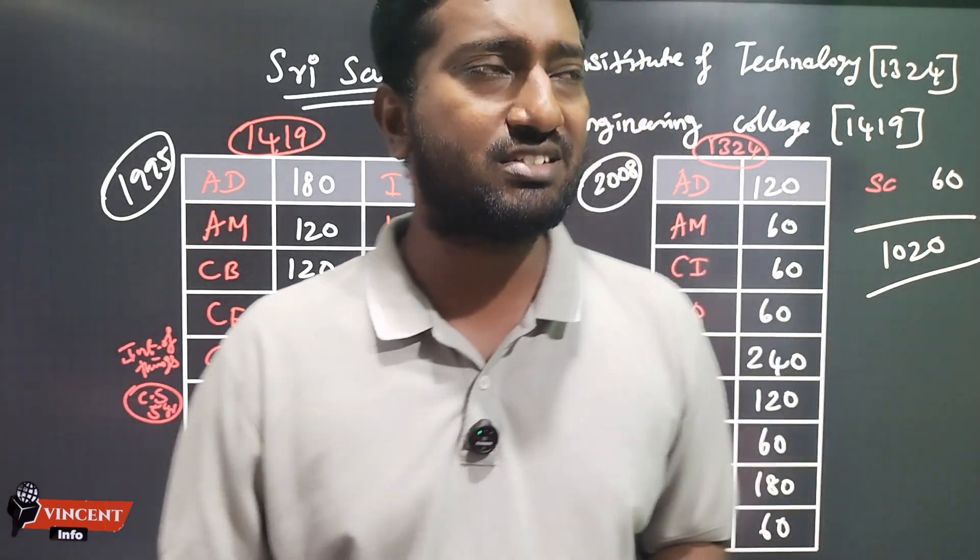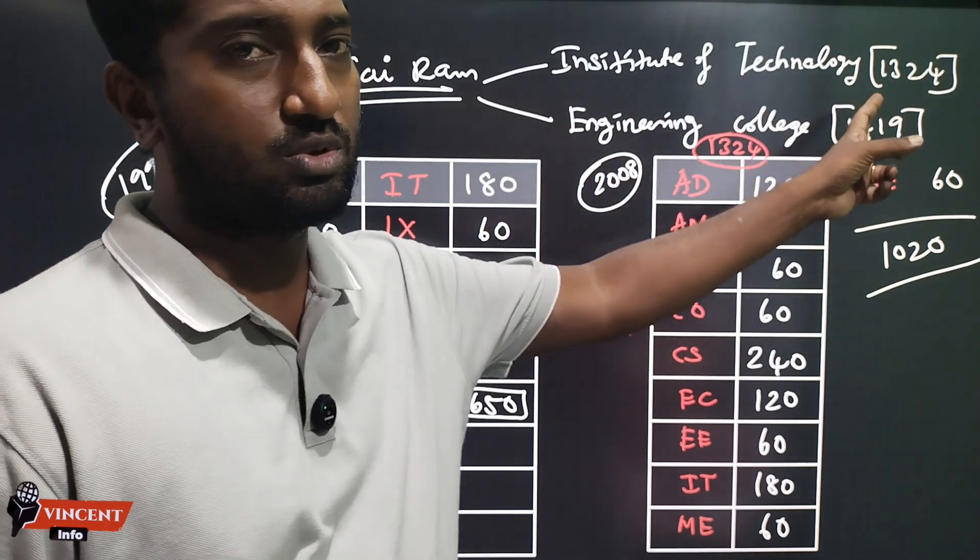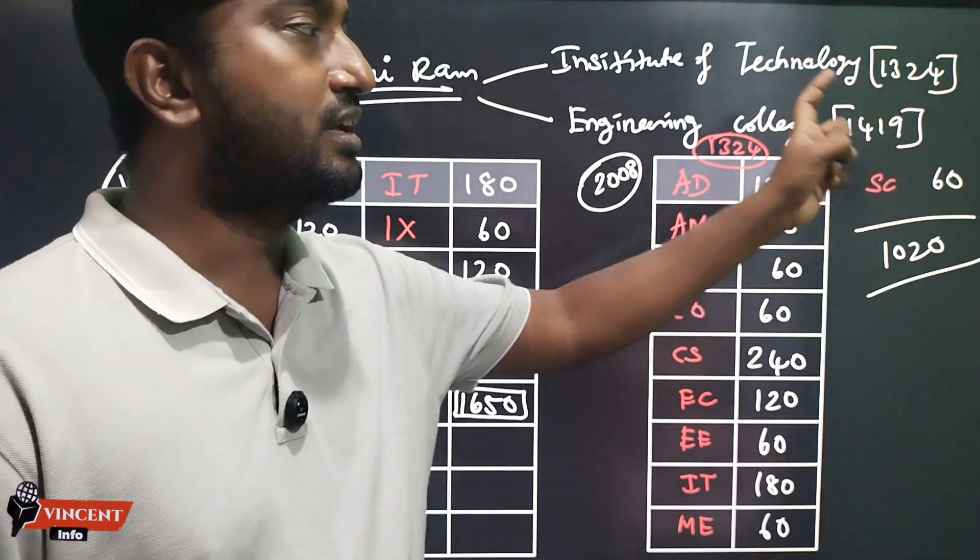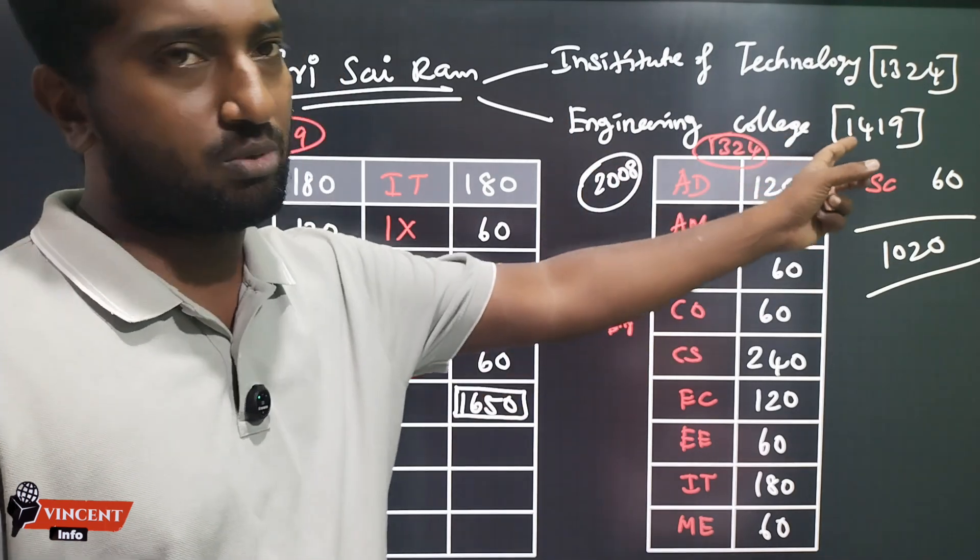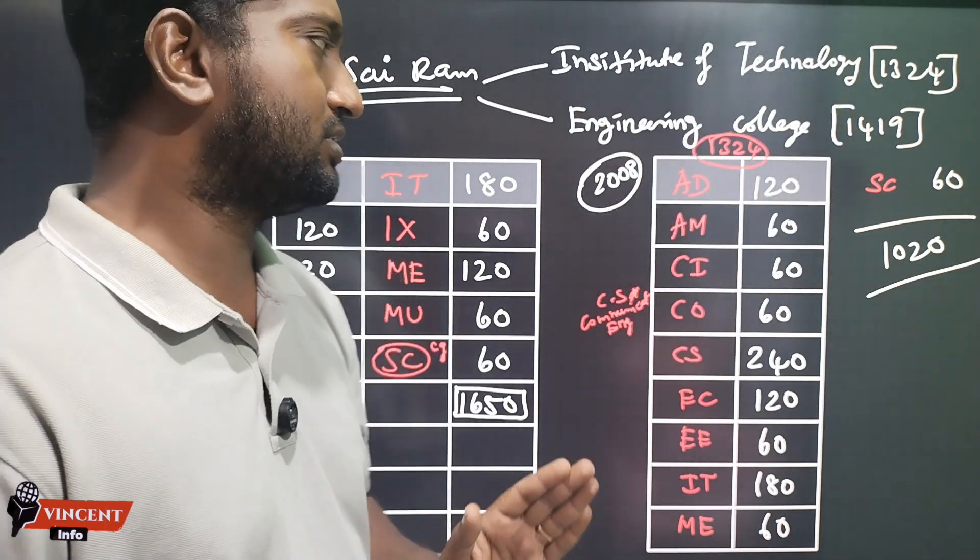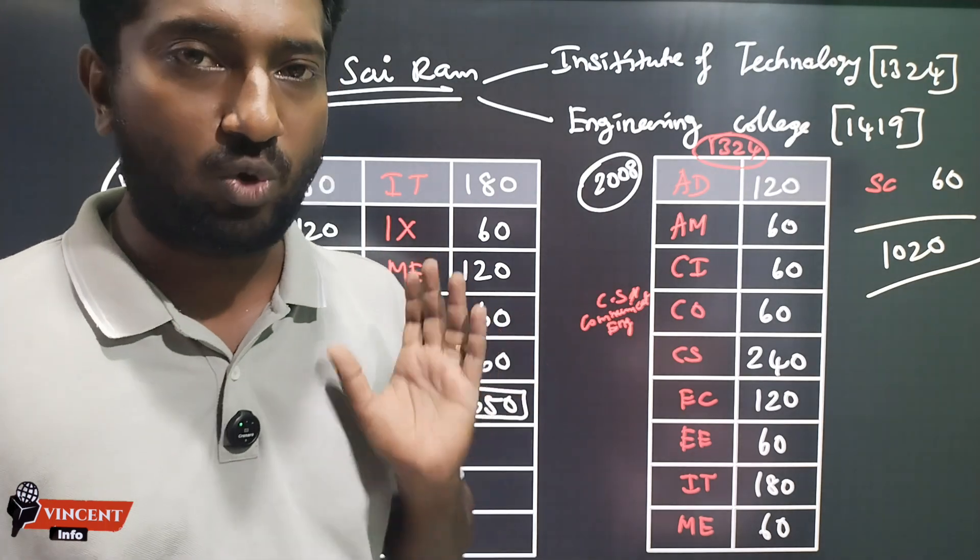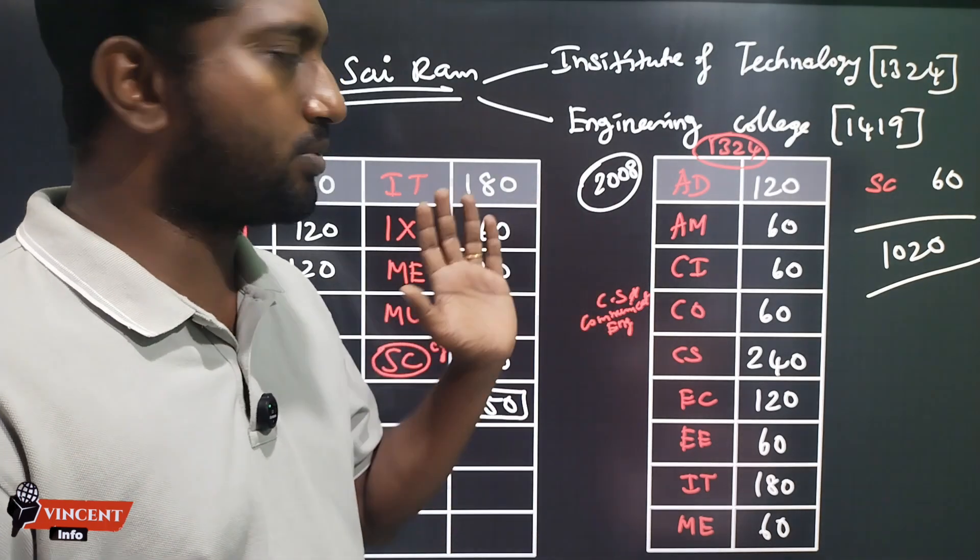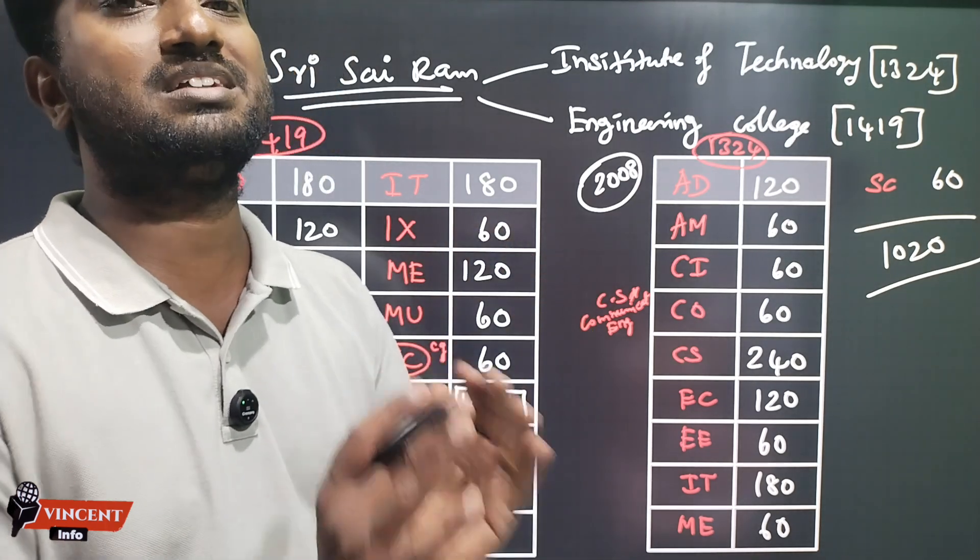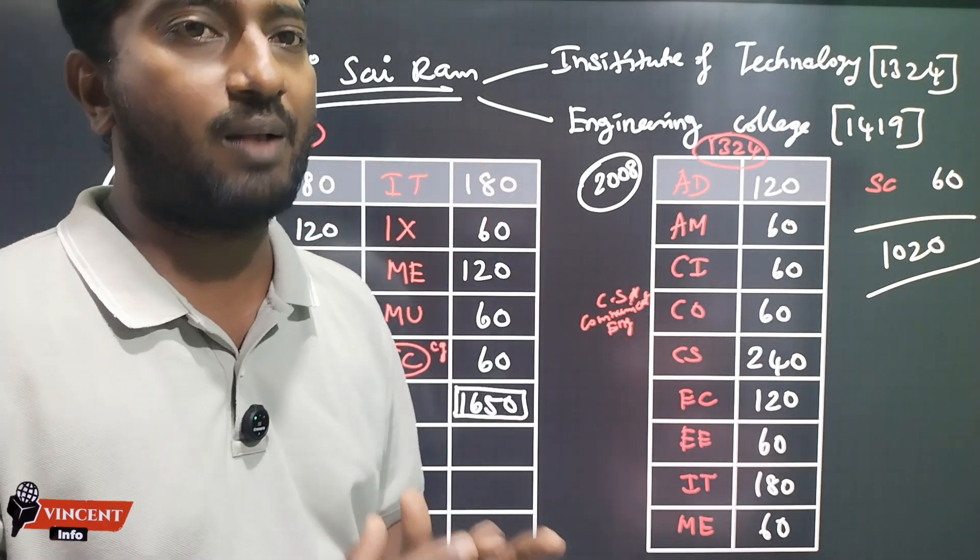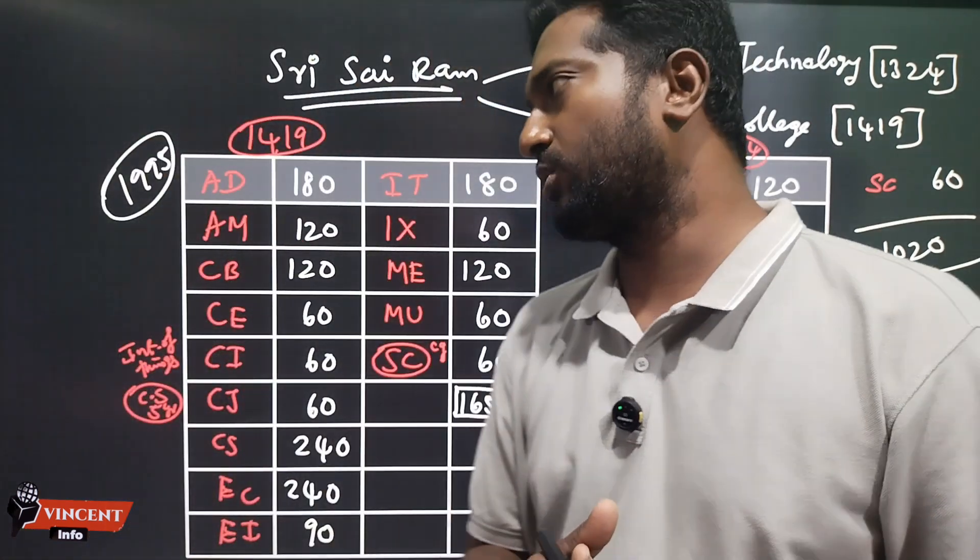Now, we are talking about the two colleges. The Sairam Institute of Technology is 1324, and the Engineering College is 1410. If you look at the Engineering College, it is open from 1995. The Institute is open from 2008. First thing is we look at the Engineering College, then we look at the Institute. What courses are there?